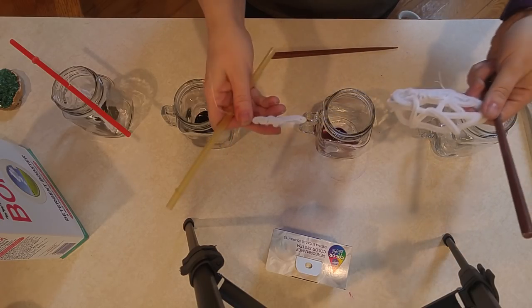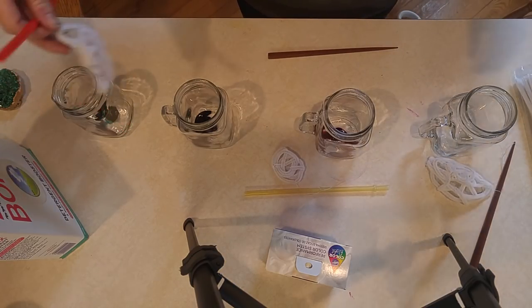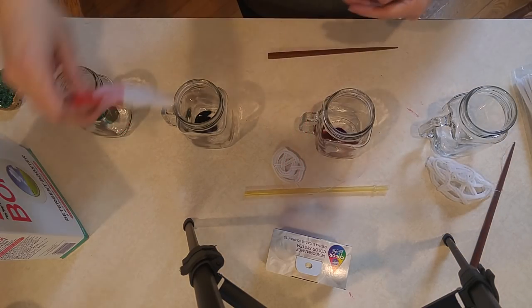What you do is you take pipe cleaners and just put them into whatever shape you're going for and the crystals are going to grow around those.